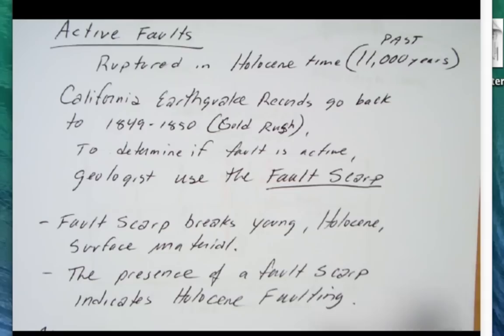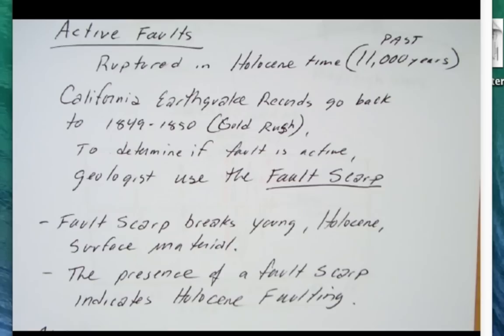Another question I have is how do we determine active faults? Your book says that an active fault is one that's ruptured in Holocene time. Holocene time is the past 11,700 years ago. Your book has 11,000 years. But the new information based on tree pollen, the climate really started warming about 11,700 years ago at the end of the ice ages.